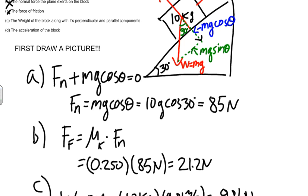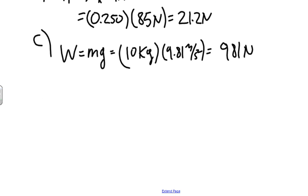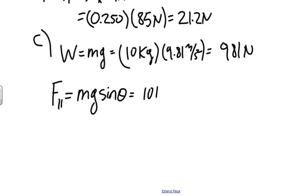The parallel component is what we talked about in class as the sliding force — I'll circle it on the diagram. That's the piece responsible for accelerating the block down the hill. Notice from the diagram that it's opposite the angle, so the parallel force equals mg sin θ. Plugging in: 10 kilograms times 9.81 meters per second squared times sine of 30 degrees. The sliding force, or parallel force, comes out to be 49 newtons.